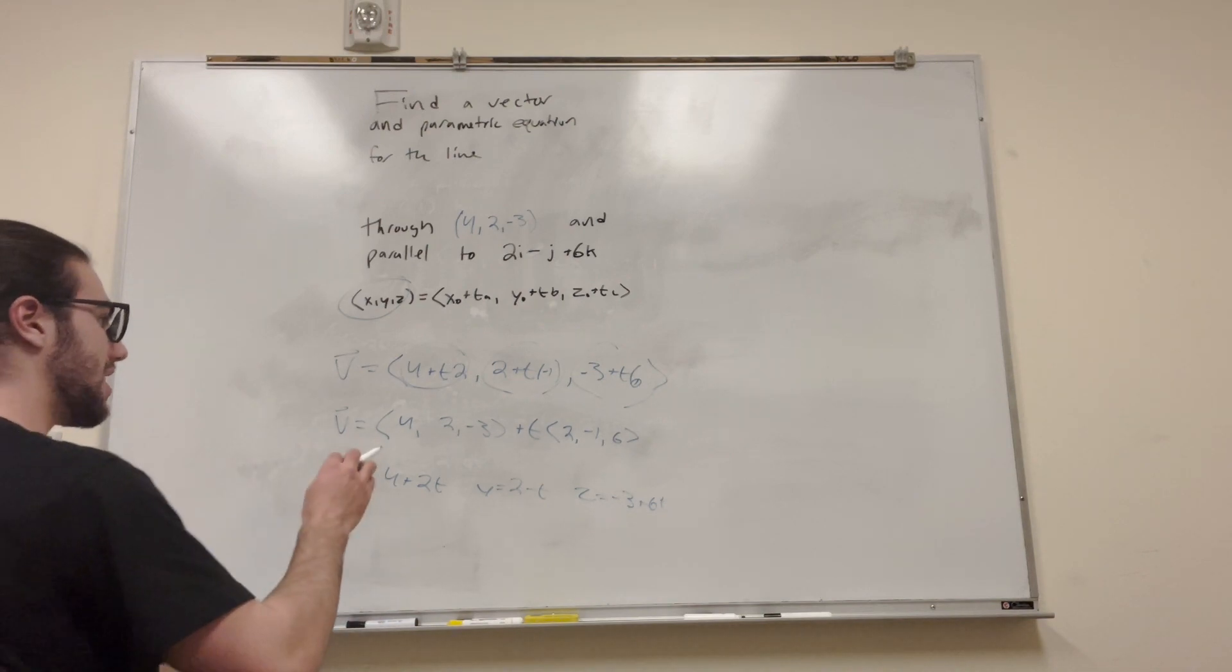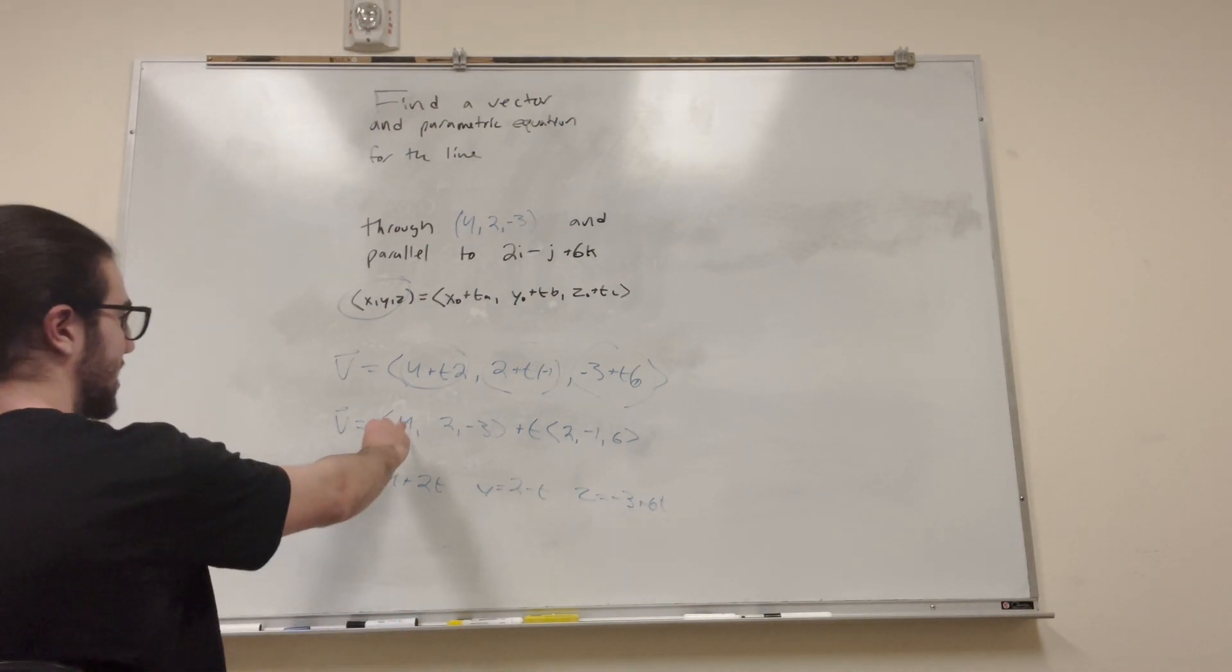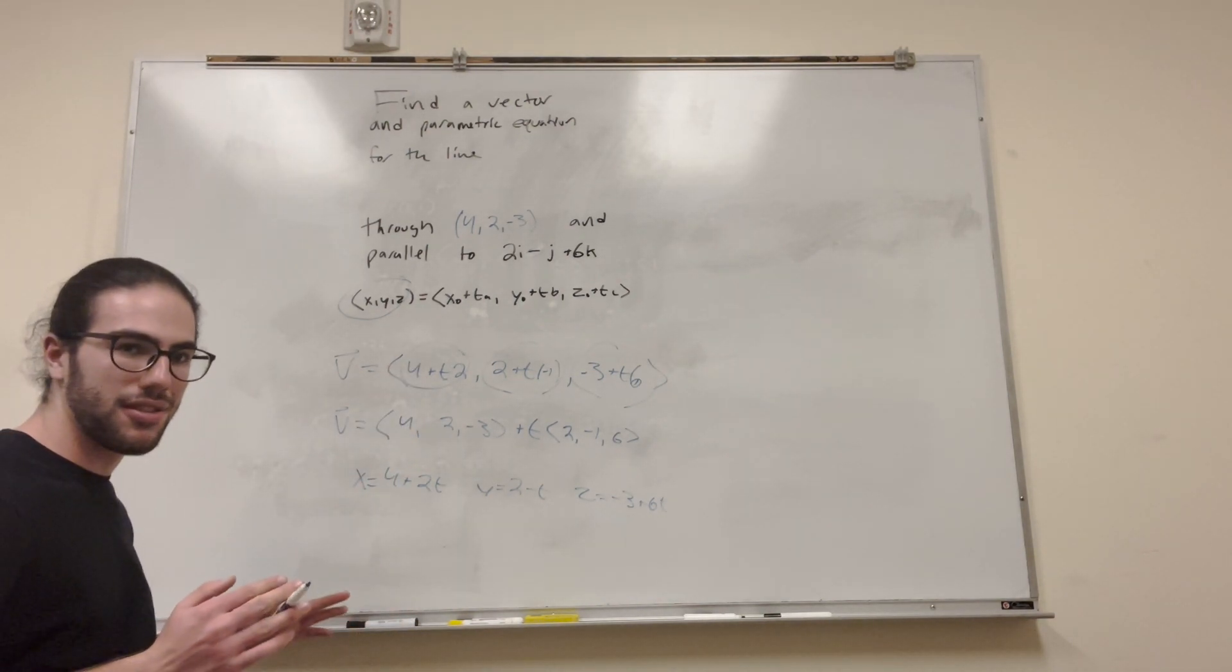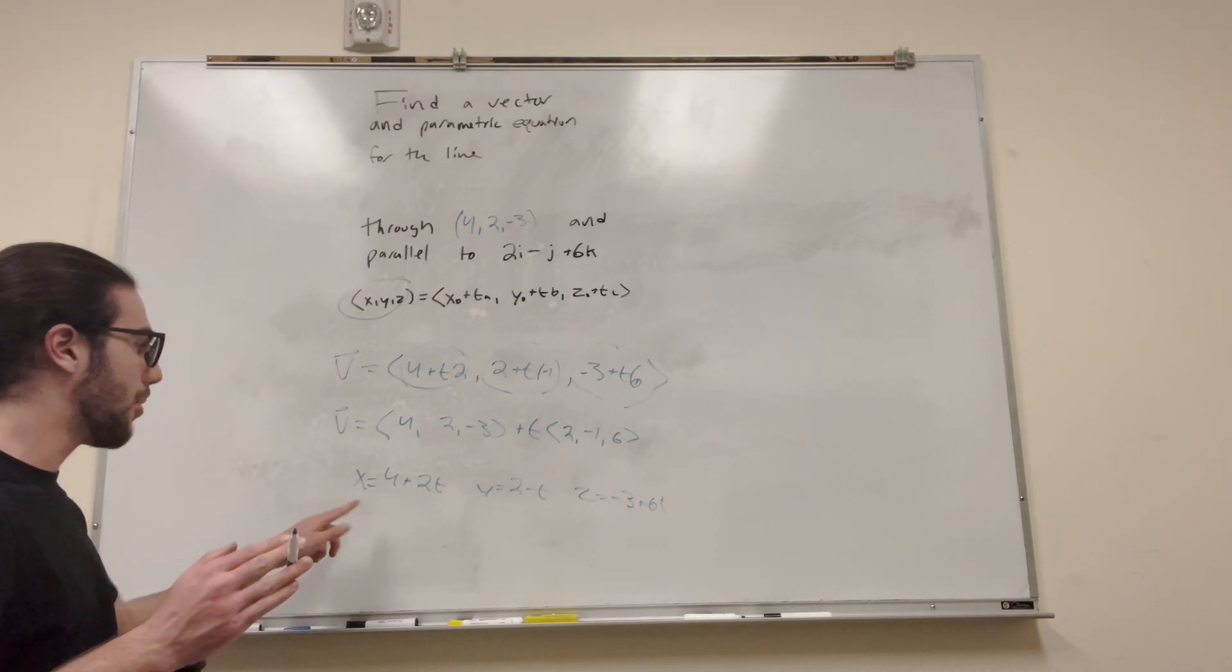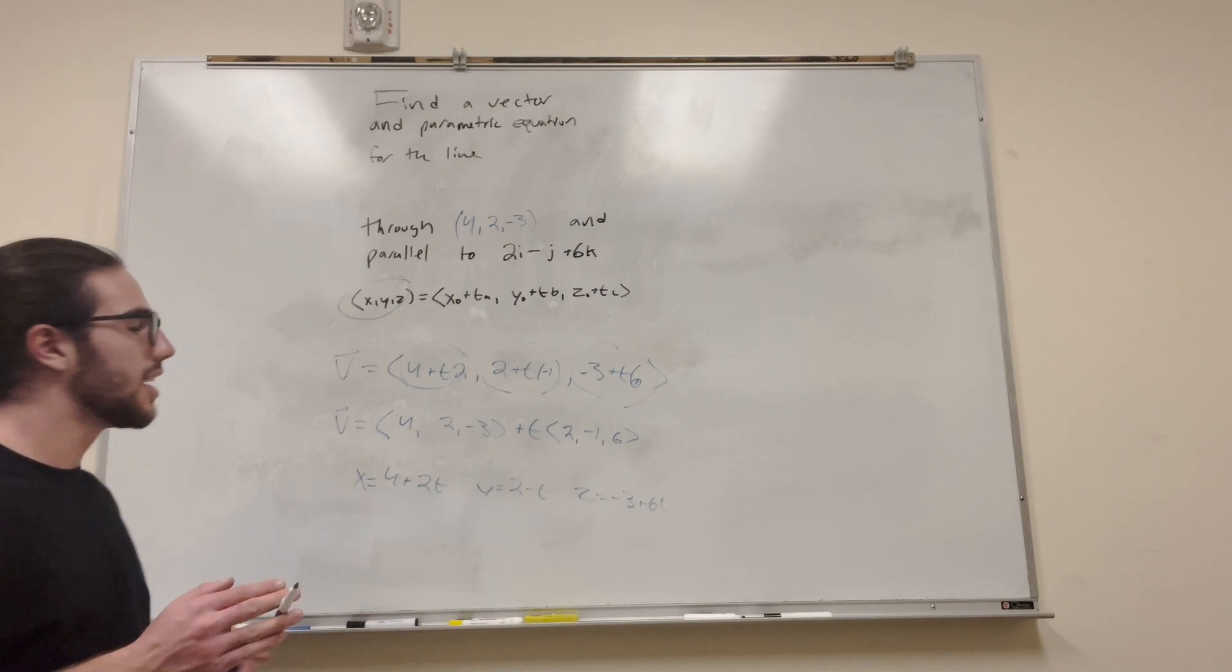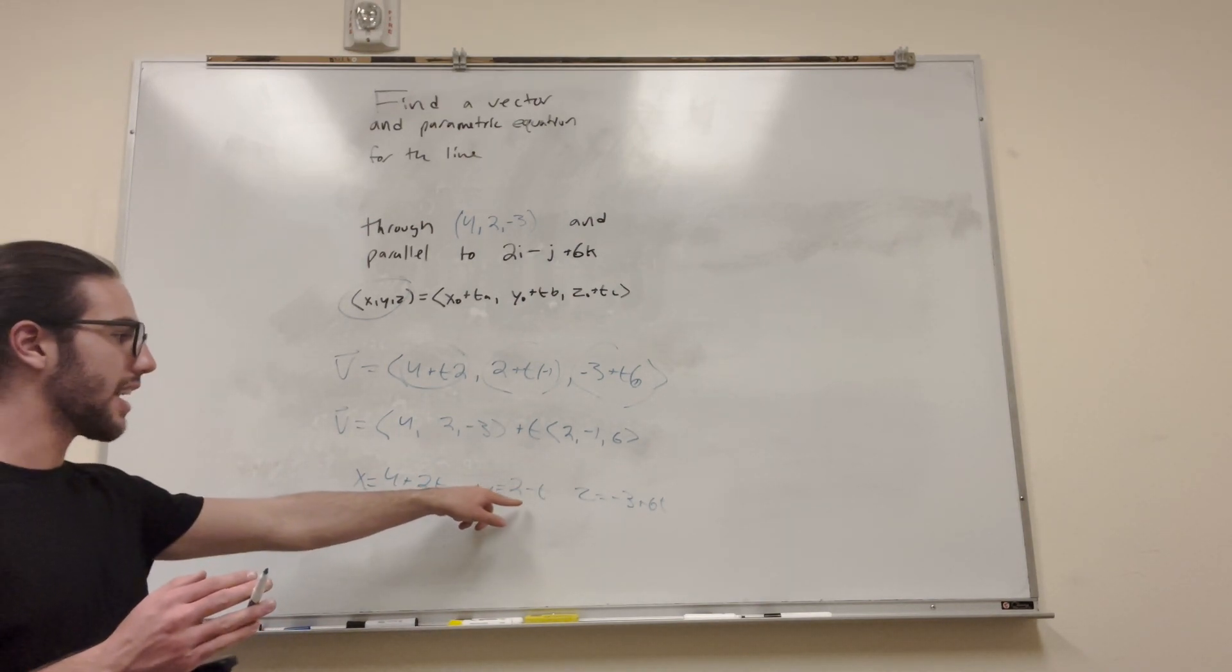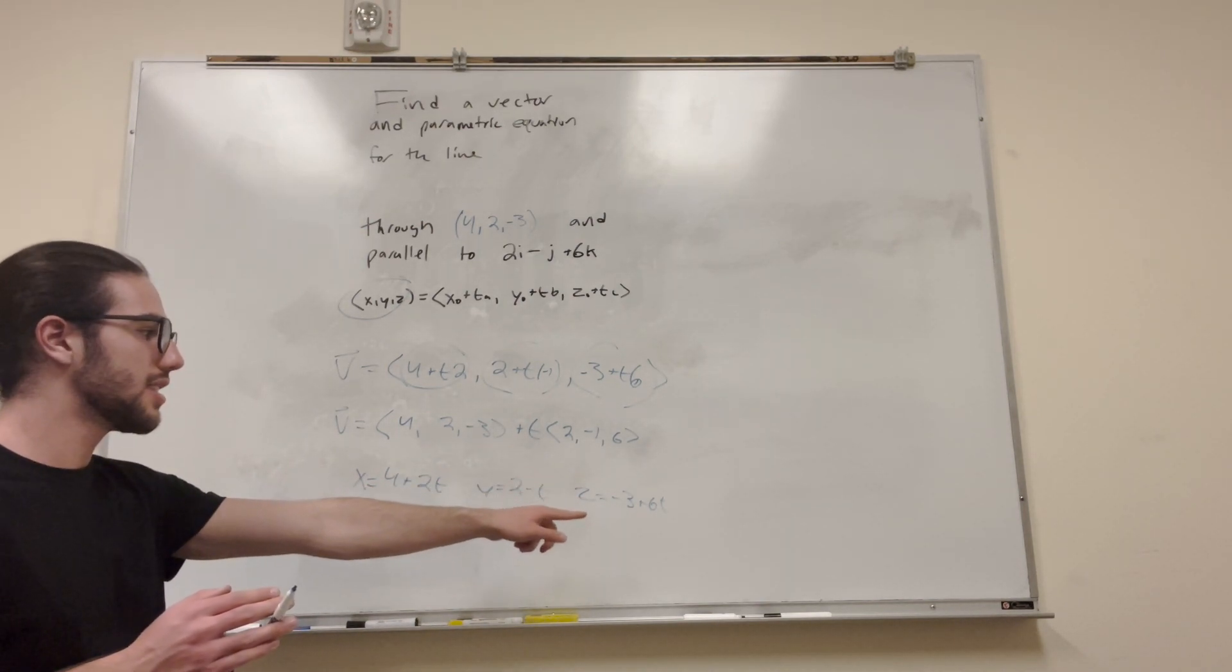Pretty simple enough. And this actually also tells you the exact same thing as this. These are all the same thing, just in different forms. And what they all tell you is that it's a line with a point 4, 2, negative 3, in the direction 2, negative 1, 6.